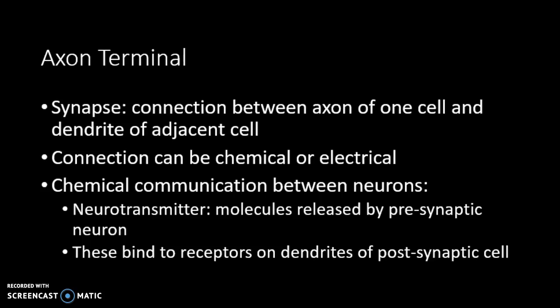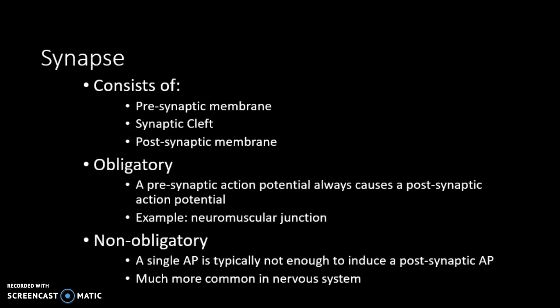Chemical communication uses neurotransmitters — like acetylcholine — which are released by the presynaptic neuron and bind to receptors on the postsynaptic dendrites. The synapse consists of the presynaptic membrane, the synaptic cleft, and the postsynaptic membrane. Obligatory synapses, like the neuromuscular junction, require only one AP to cause depolarization and muscular contraction. Non-obligatory synapses, more common in the nervous system, require temporal or spatial summation since one AP may not be sufficient.